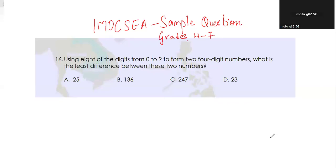Hello friends, today we will be doing one of the sample questions from the sample papers for the exam IMO CSEA. It's happening on July 7th, 2024 this year. So let's just read the question: Using eight of the digits from zero to nine to form two four-digit numbers, what is the least difference between these two numbers?